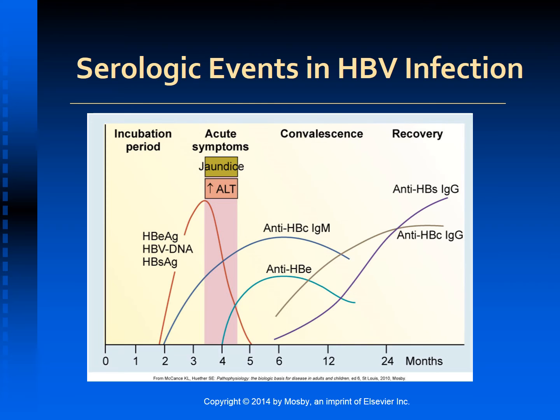Hepatitis B virus is a complex structure with three distinct antigens: the surface antigen HBsAg, the core antigen HBcAg, and the E antigen. HBsAg present in serum for six months or longer indicates chronic HBV infection. Each antigen has a corresponding antibody that may develop in response to HBV infection. The presence of hepatitis B surface antibody in the blood indicates immunity from the HBV vaccine or from past HBV infection.